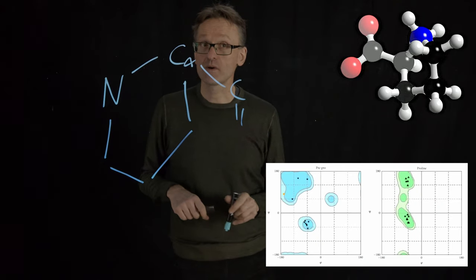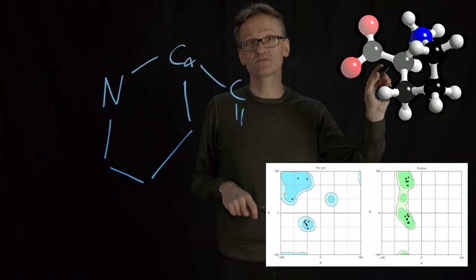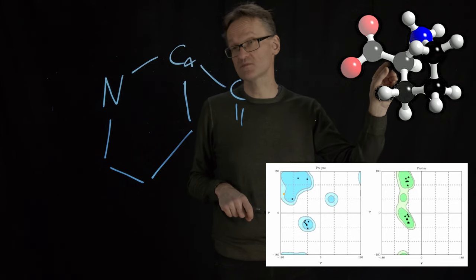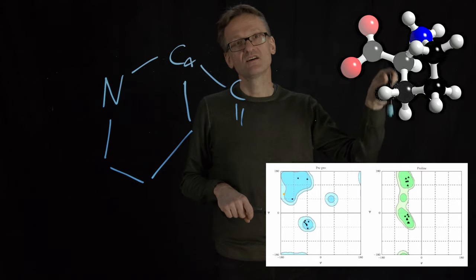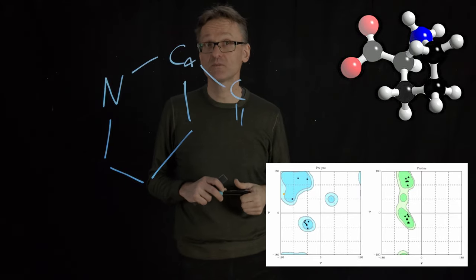We can see that in the Ramachandran plot too. It's kind of just a line here because one of the five psi torsions has been locked in—the psi torsion, the phi torsion. So there are only two small regions where it can be and neither of them is really compatible with the alpha helix.